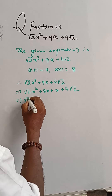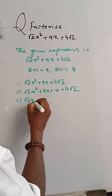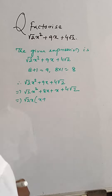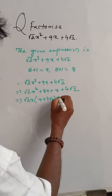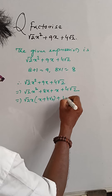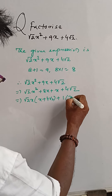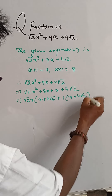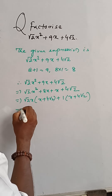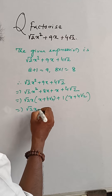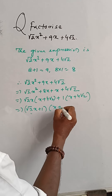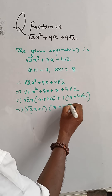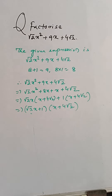Then, √2·x is the common factor from the first two terms giving √2·x(x + 4√2), and 1 is the common factor from the last two terms giving 1(x + 4√2). So the factored form is (√2·x + 1)(x + 4√2). Thank you.